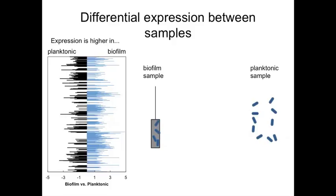We compared the transcriptomes of the biofilm and planktonic samples and found widespread changes in gene expression. Nearly a quarter of all genes measured were differentially expressed between these conditions. This is visible in the graph on the left showing the difference in expression for each gene. Two of the most prominent changes were increased expression of polysaccharide utilization loci and host mucus degrading enzymes.